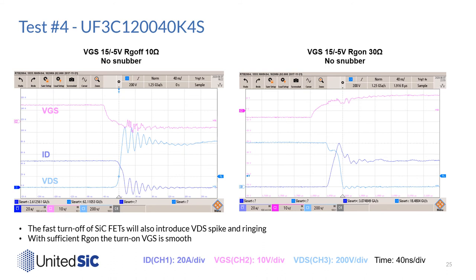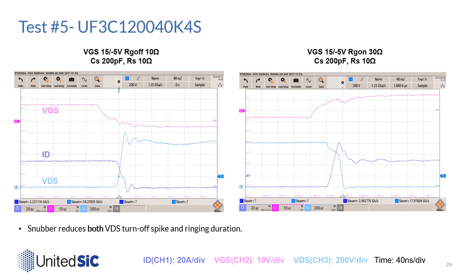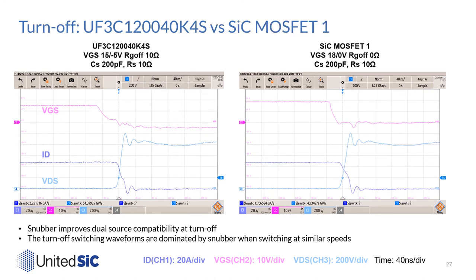In test 4, we repeated the no-snubber condition for the United SiC part. For this fast switching silicon carbide device, turn-off shows high VDS spike and long ringing duration, while turn-on with proper selection of RG can still have a very smooth waveform. In test 5, we repeated the snubber benefits on the United SiC part. For turn-off, the peak VDS spike is reduced and ringing duration is damped. Snubber has almost no effect on the turn-on waveform. Putting United SiC and Vendor A turn-off waveforms together, the VDS waveform is almost identical — snubber dominates the turn-off switching waveform and device dual-source compatibility is improved at turn-off.